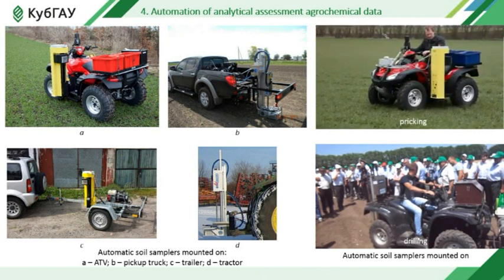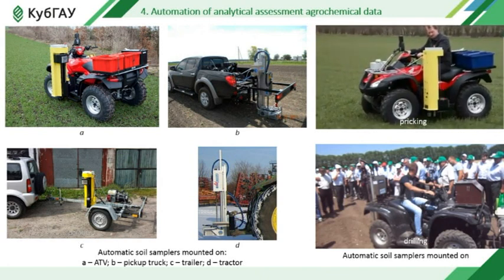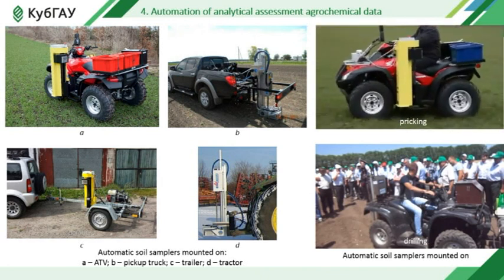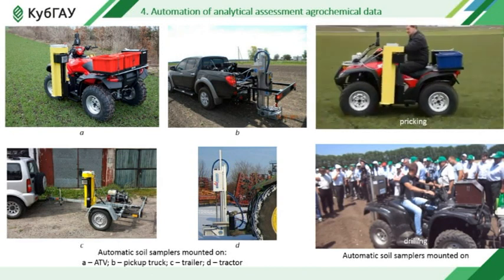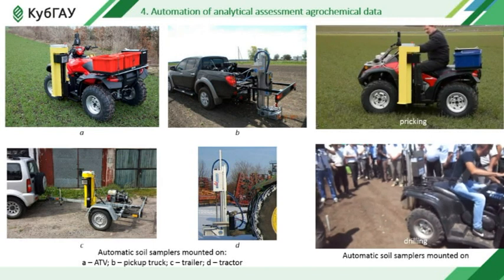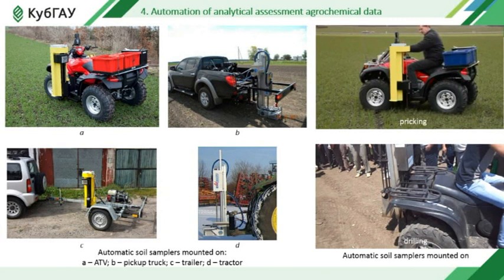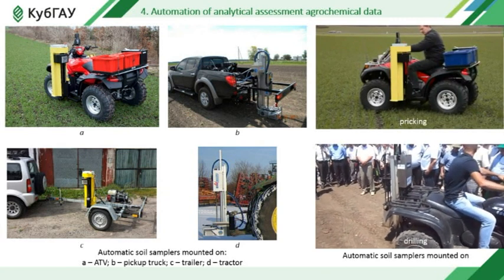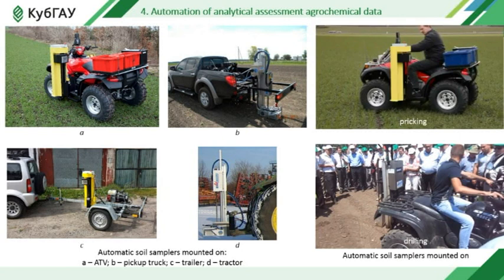Automated soil samplers are used to improve productivity. Such a sampler mounted on a vehicle — ATV, SUV, trailer or tractor — allows taking soil samples for agrochemical inspection from an area of up to 1,500 hectares per day, while the human factor of poor soil sampling is excluded. The sampler mounted on the ATV can be used throughout the season; it leaves no traces in early spring sampling of soils and is maneuverable and highly productive. The disadvantage of the ATV is the lack of comfortable working conditions for the specialist and the need for another vehicle with a trailer for its transportation.